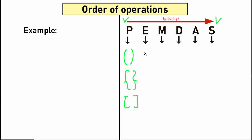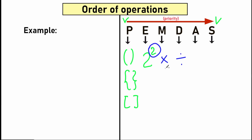The next thing is E — exponents, or O — orders. In both PEMDAS and BODMAS we are talking about powers, for example raising 2 to the power of 2. This is our second step. Next is M for multiplication and D for division. A lot of students are confused arguing that multiplication comes before division, but that is not how it works — it works in strict order from left to right.